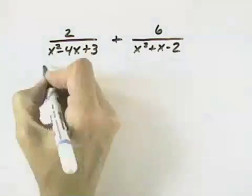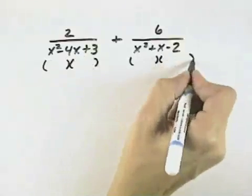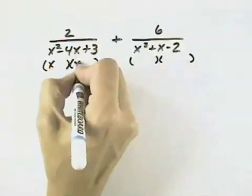A common denominator will have all common factors, so we need to determine what factors our denominator will need. To do that, we need to factor both of our denominators.